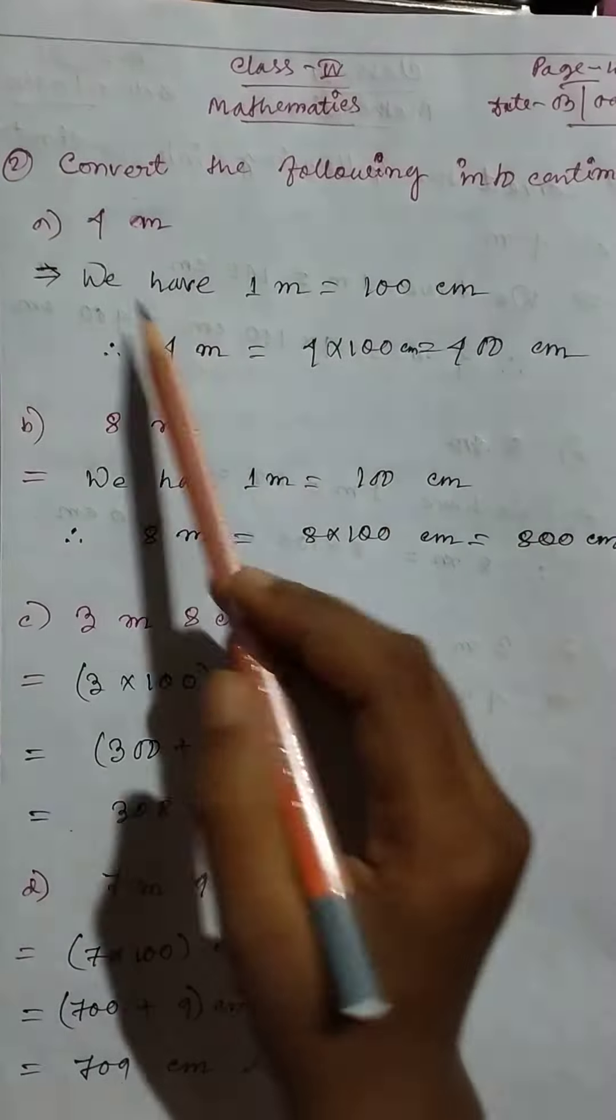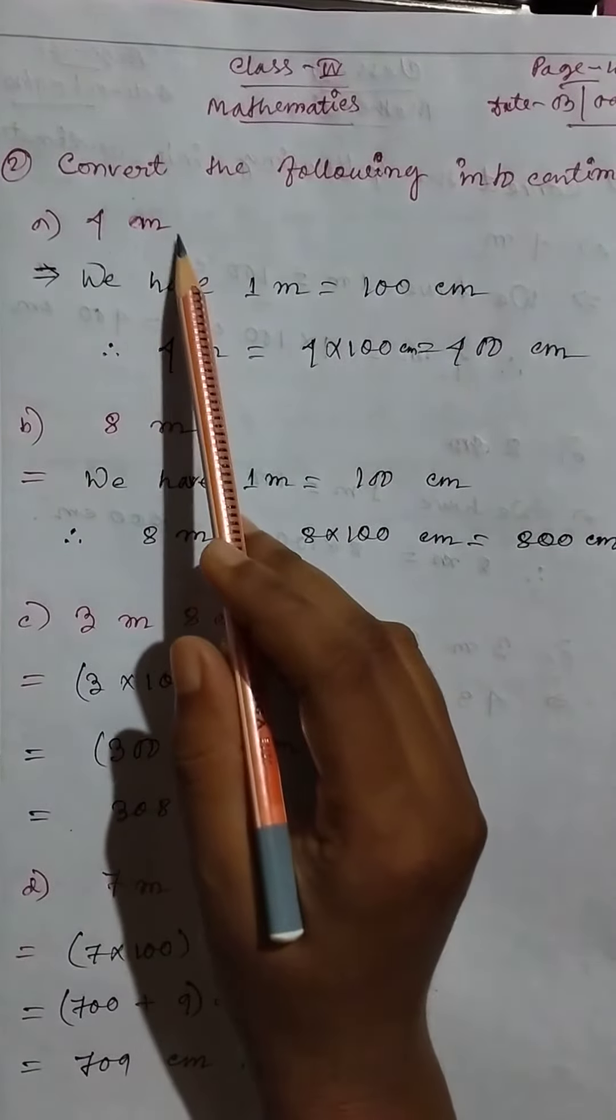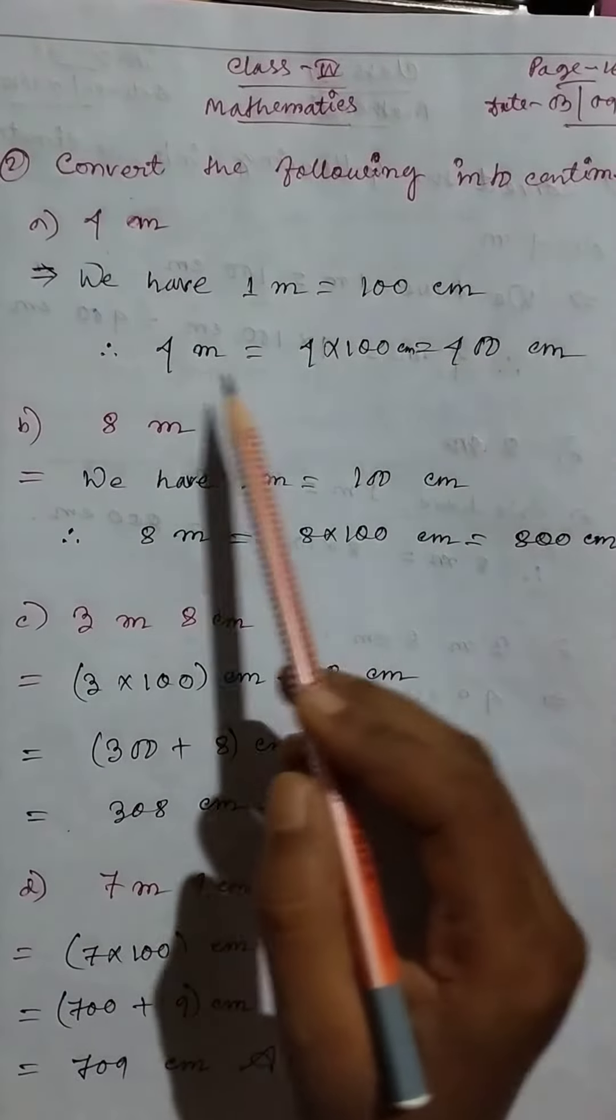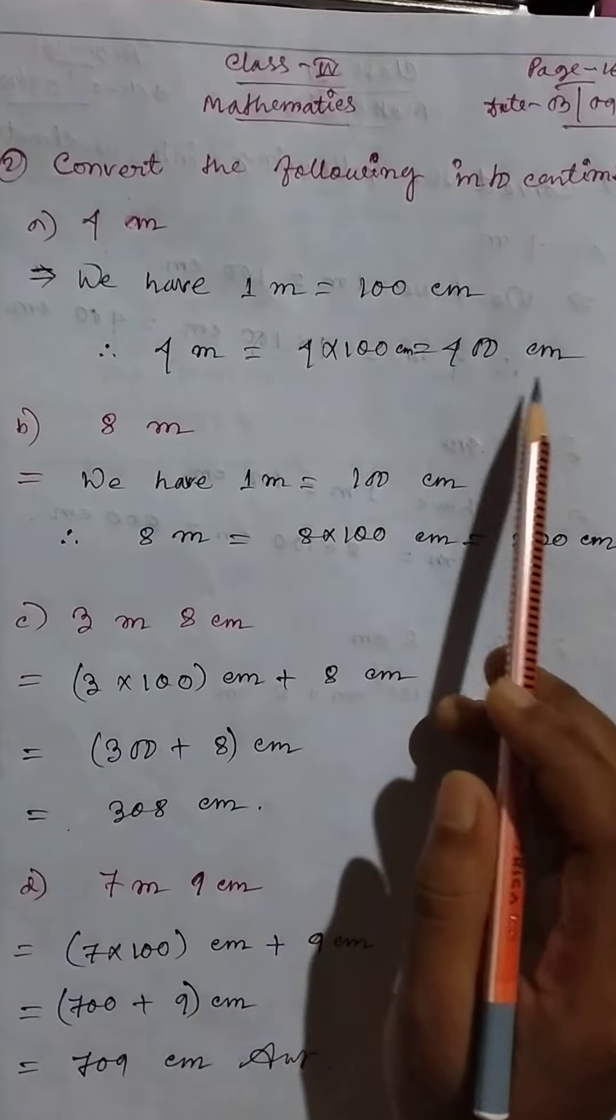Convert the following into centimeters. 4 meters equal to... We have 1 meter equal to 100 centimeters. So 4 meters equal to 4 times 100 centimeters, equal to 400 centimeters.